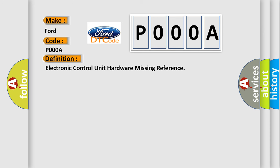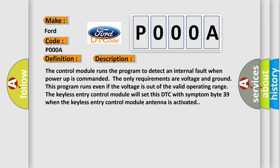The control module runs the program to detect an internal fault when power-up is commanded. The only requirements are voltage and ground, this program runs even if the voltage is out of the valid operating range. The keyless entry control module will set this DTC with symptom byte 39 when the keyless entry control module antenna is activated.